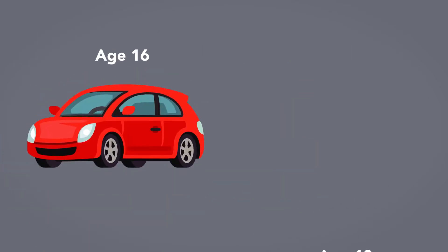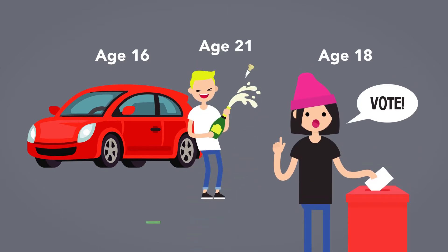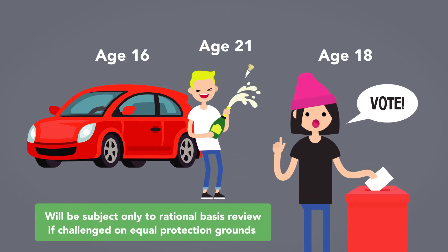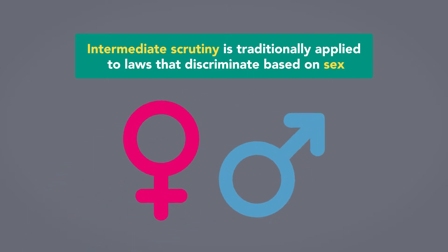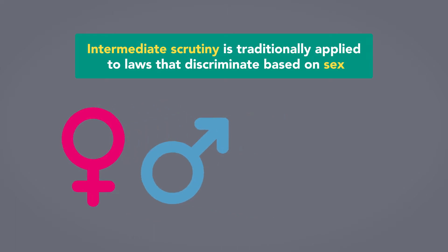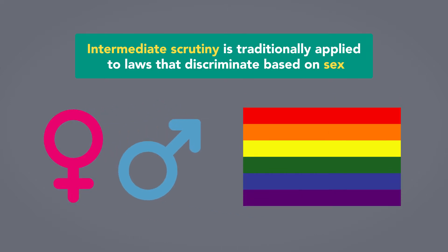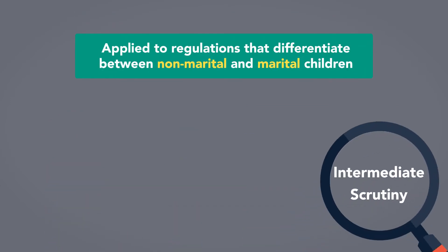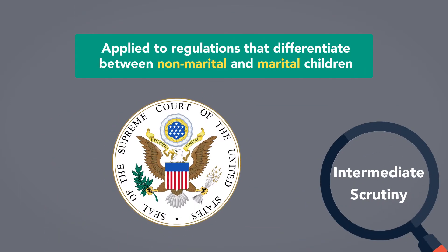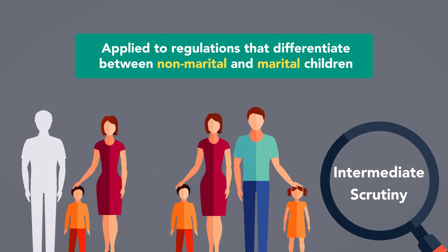For example, laws that require people to be 16 to drive, 18 to vote, or 21 to drink will be subject only to rational basis review if challenged on equal protection grounds. Intermediate scrutiny is traditionally applied to laws that discriminate based on sex. In recent years, several courts including two federal appellate courts have applied medium scrutiny to laws that differentiate based on sexual orientation. This level of scrutiny has also been applied by the Supreme Court to regulations that differentiate between non-marital and marital children.